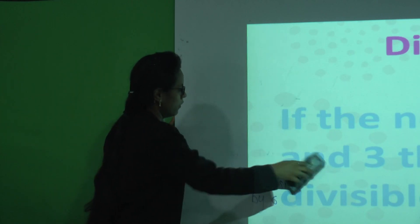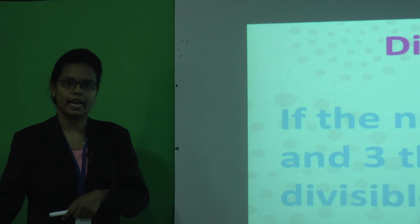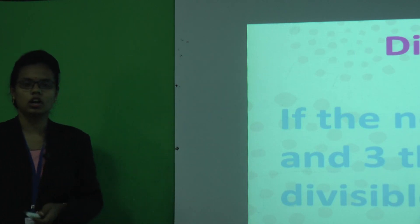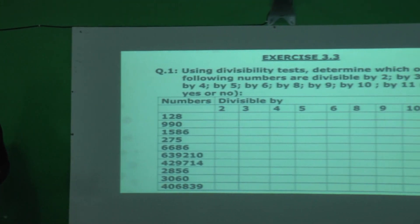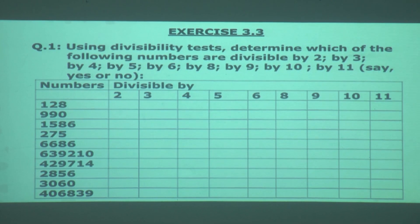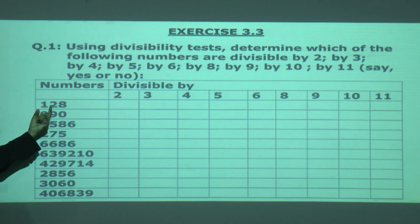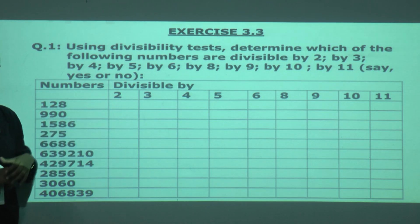These were the divisibility rules we have seen for different numbers: 2, 3, 4, 5, 6, 8, 9, 10, and 11. Now let us solve some examples. Using the divisibility test, determine which of the following numbers are divisible by 2, 3, 4, 5, 6, 8, 9, 10, and 11. We have the 3-digit number 128.